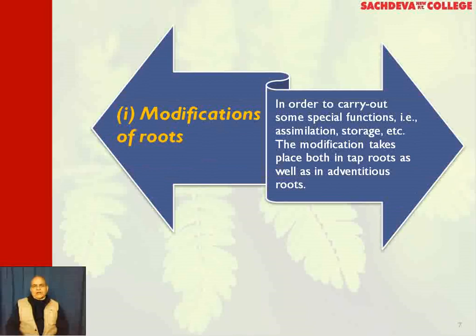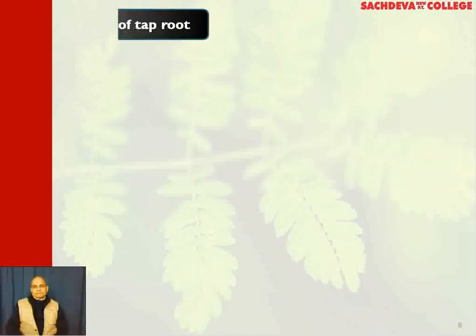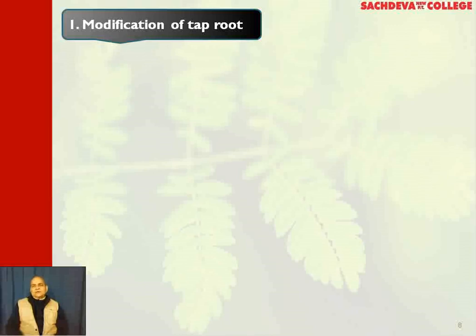Then comes the modifications of the roots. In order to carry out some special functions such as assimilation and storage, modification takes place both in tap roots as well as in adventitious roots. We will now discuss, first, the modification of the tap roots. The tap root is the elongation of, or is the persistent radicle developing into, a tap root.